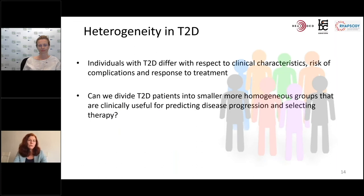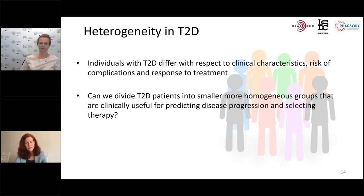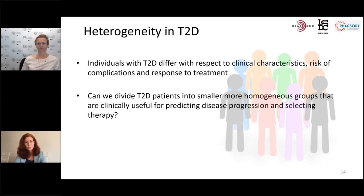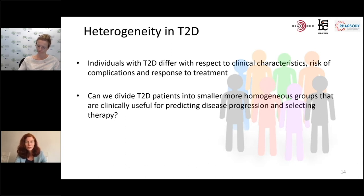Even within the type 2 diabetes group there is a lot of heterogeneity, and these individuals differ with respect to clinical characteristics, risk of complications, and how patients respond to treatment. The goal of our project has been to divide these type 2 diabetes patients into smaller, more homogenous groups that could be clinically useful for predicting who will develop complications and how disease will progress.